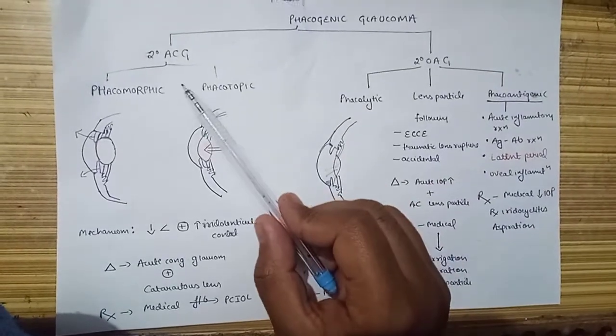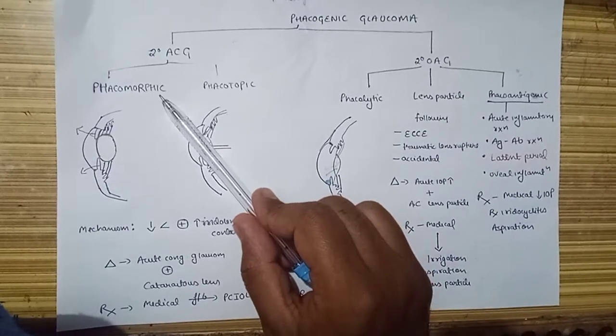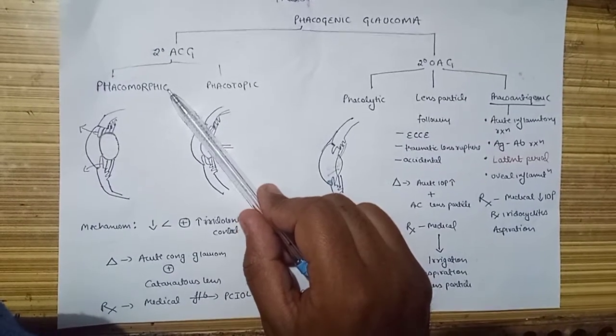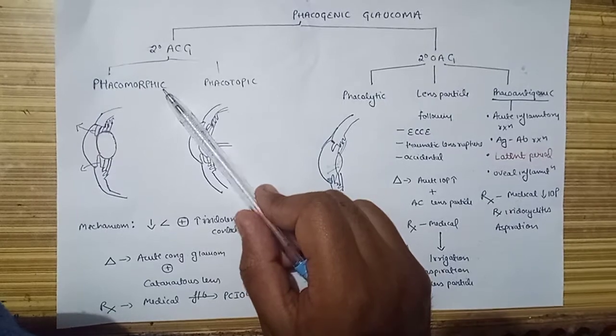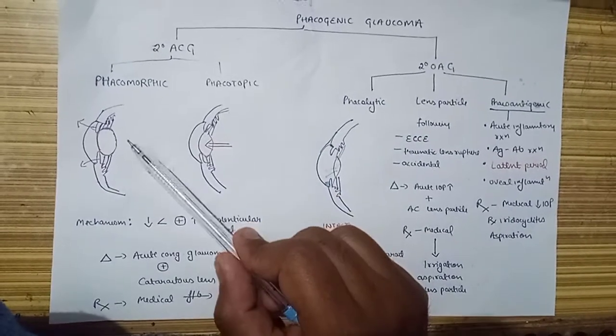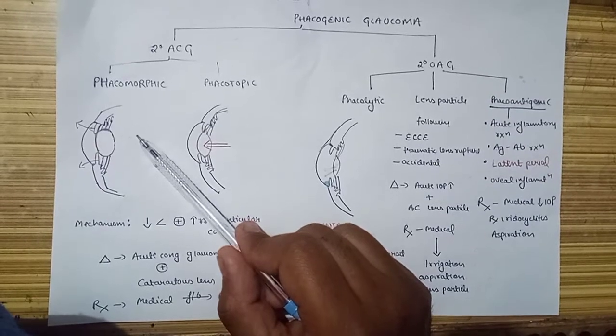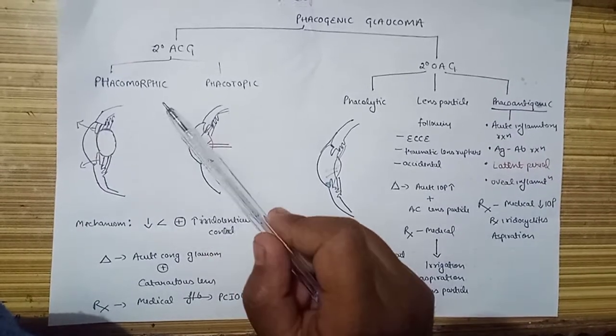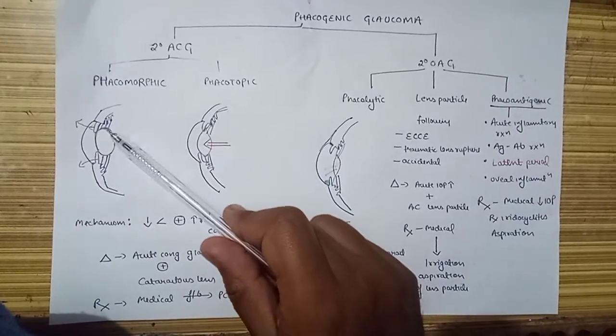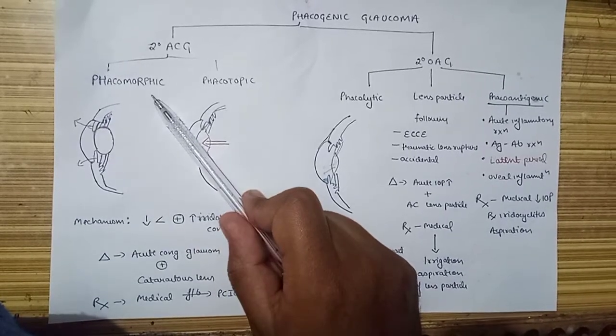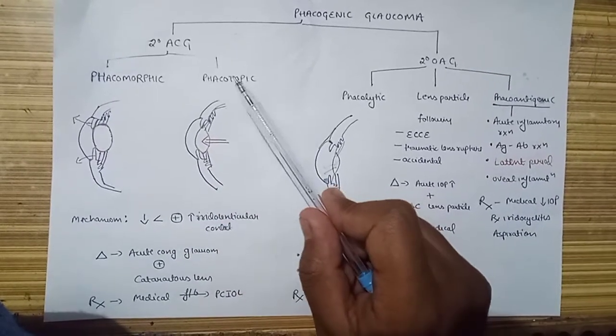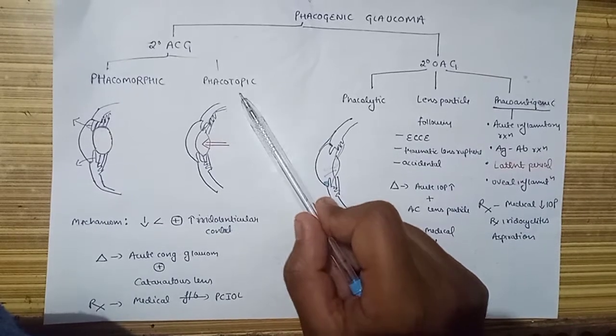Secondary angle closure glaucoma mainly have two causes: phacomorphic cause, where there is a change in morphology of lens like a swollen lens that occurs in hypermature cataract or hypermature morganian cataract. This swollen lens is one cause for angle closure glaucoma.